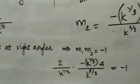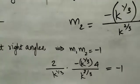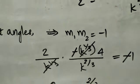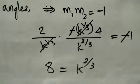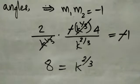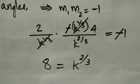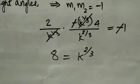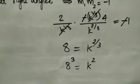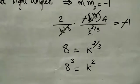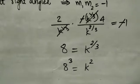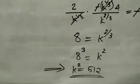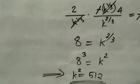Substituting m1 and m2 and simplifying: the product gives −8/k^(2/3) multiplied through equals −1. Rearranging: 8 raised to the appropriate power gives 8³ = k², that is 512 = k². Therefore k² = 512 is proved.